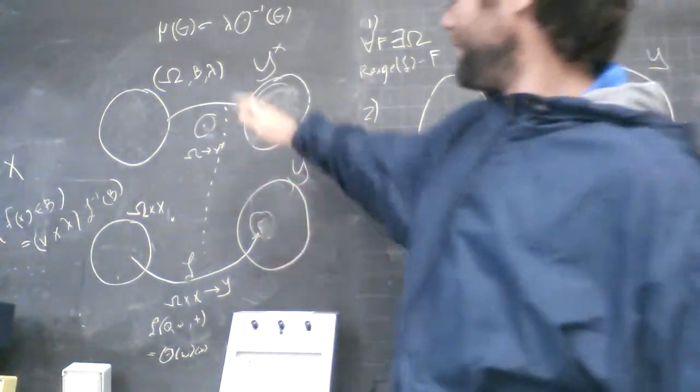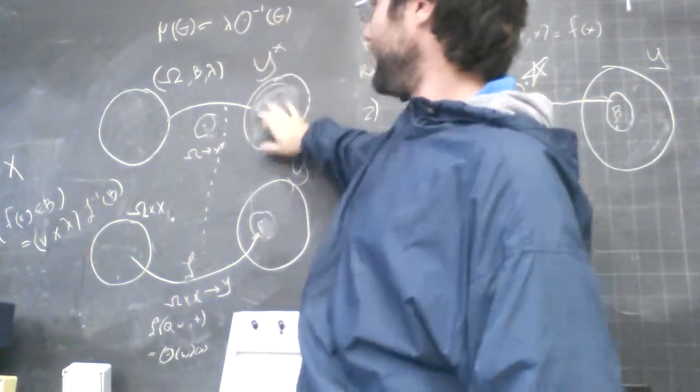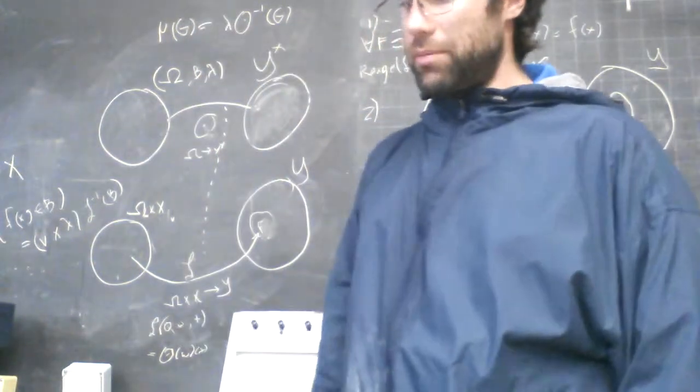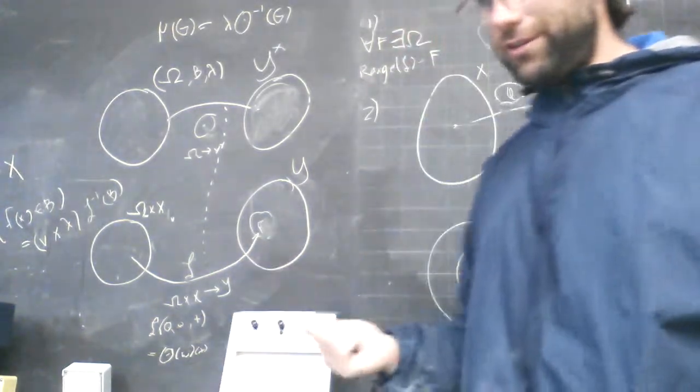Or rather, the inverse of that function applied to your range, or a subset of your range, multiplied by the measure for your probability space. So again, that's number two.